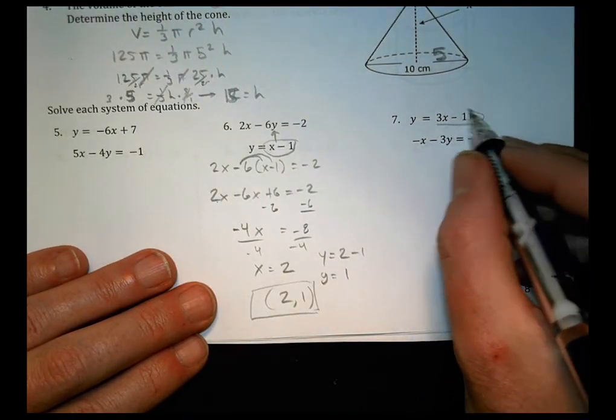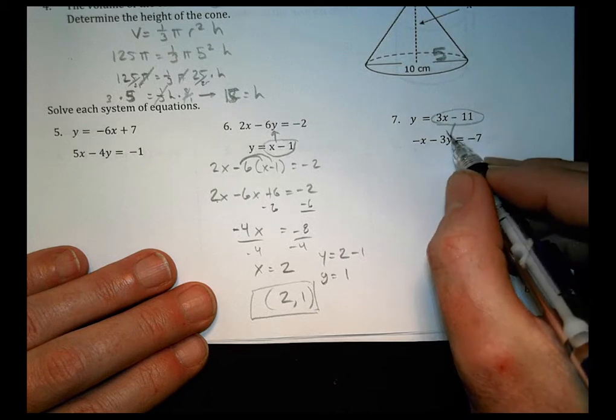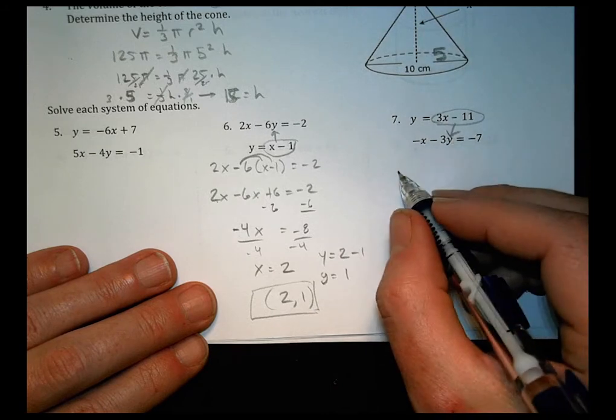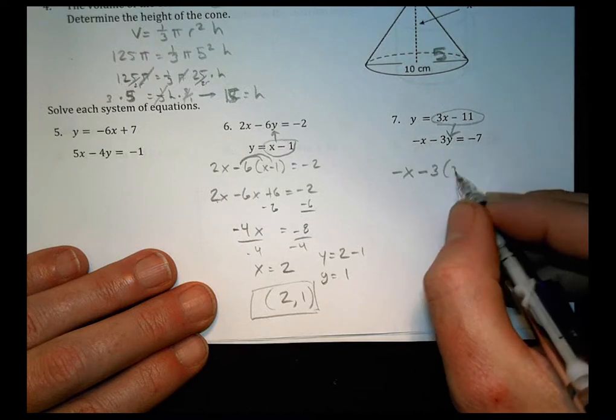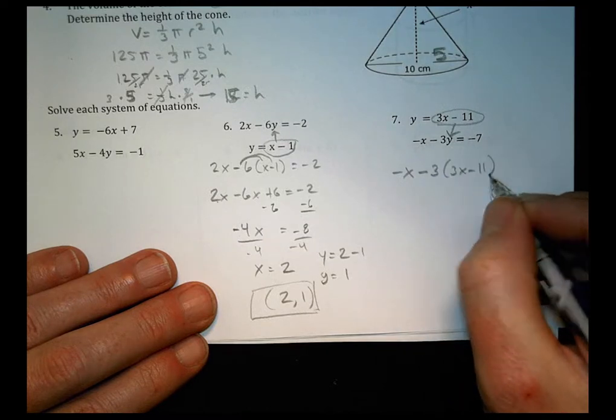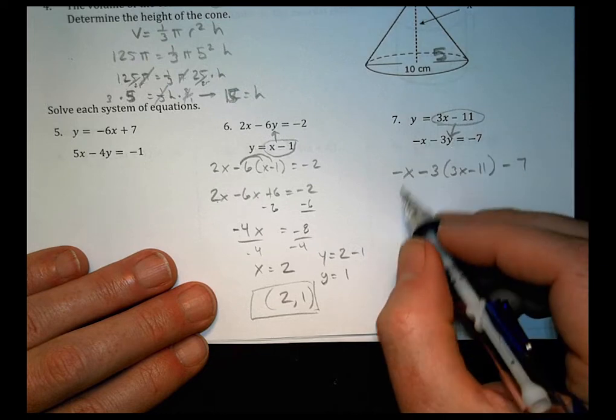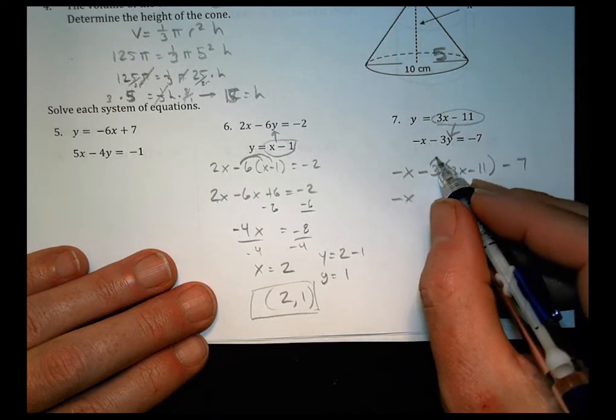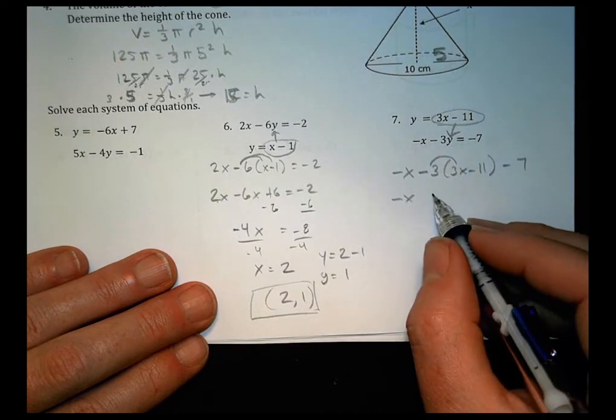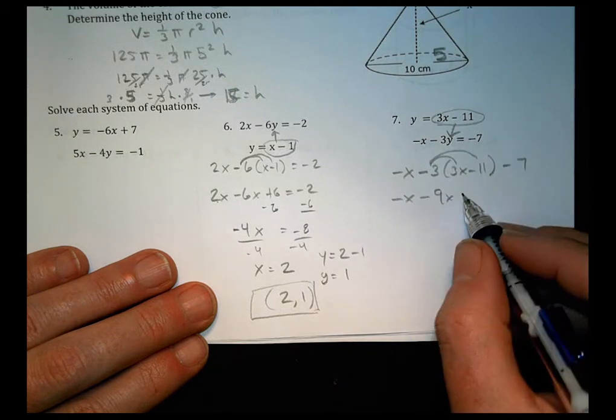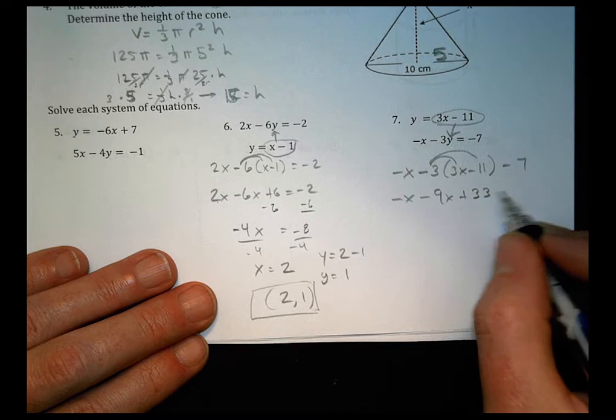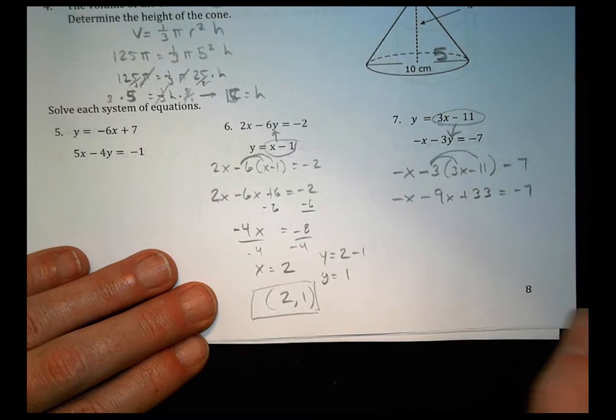Number 7, same idea. We take this value and we plug it in right there. And so we have negative x minus 3 times 3x minus 11 equals minus 7. So we keep the minus x there. Negative 3 times 3x is a negative 9x, and negative 3 times negative 11 is a positive 33, and that equals minus 7.